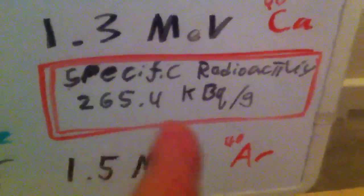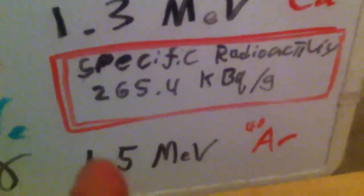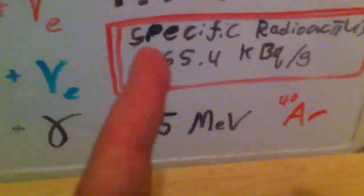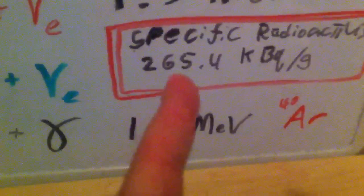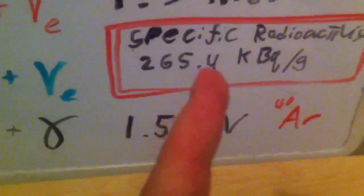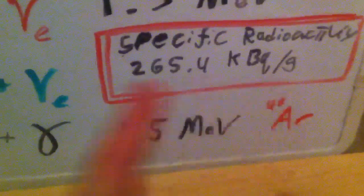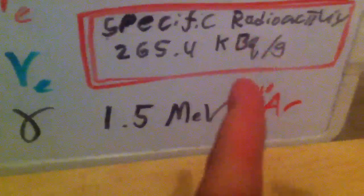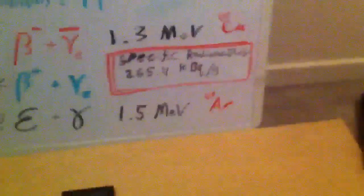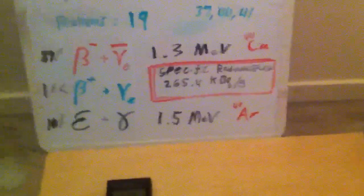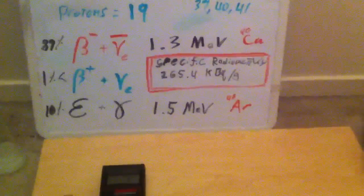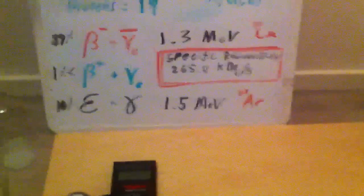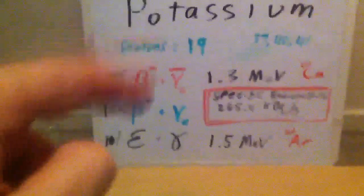The specific radioactivity of potassium — and yes, I have radioactive samples to show you in a minute — is 265,400 becquerels per gram, or 265.4 kilobecquerels per gram. A becquerel is one decay per second. So every second, one gram of potassium will undergo 265,400 radioactive decays by one of these three modes.